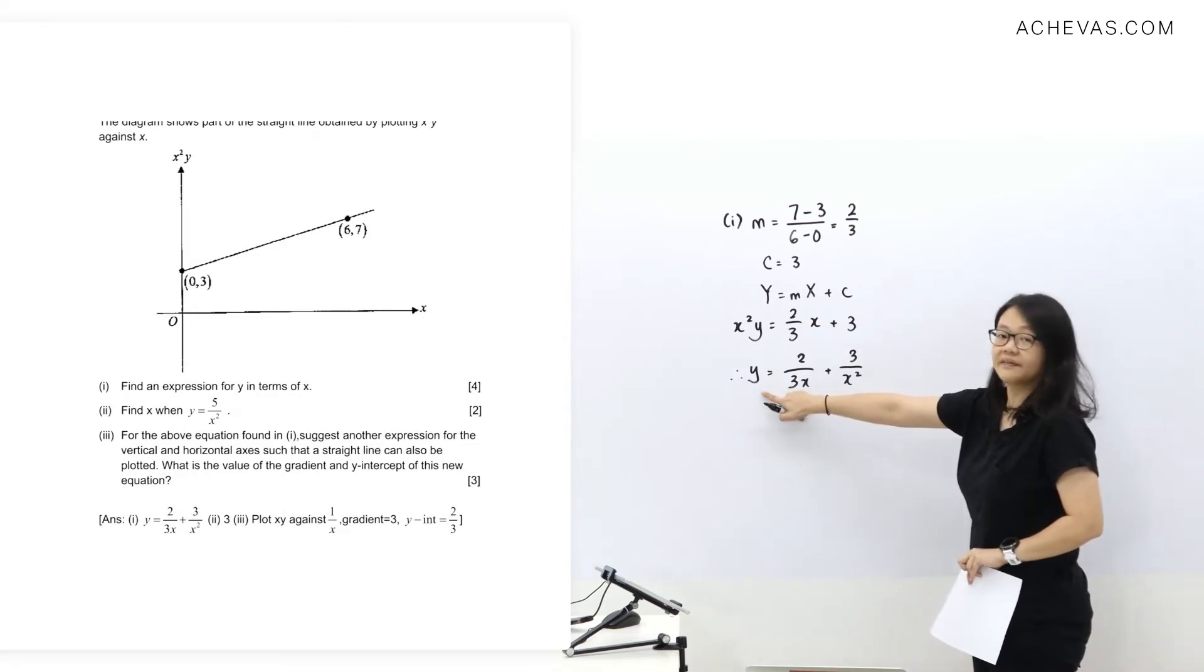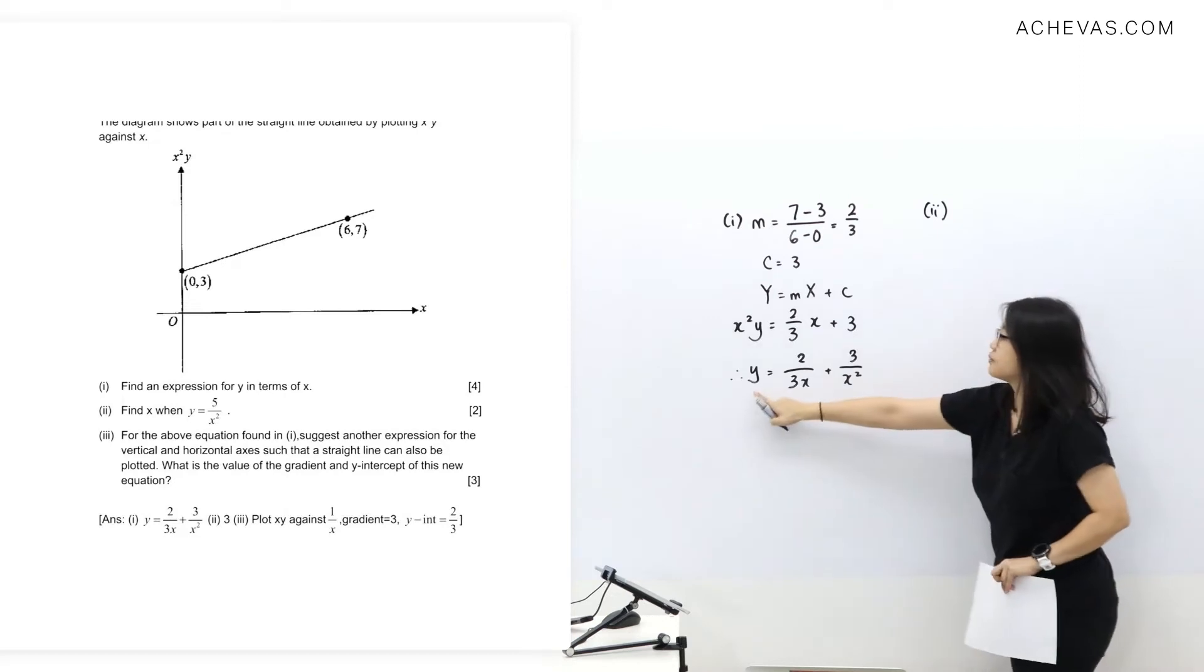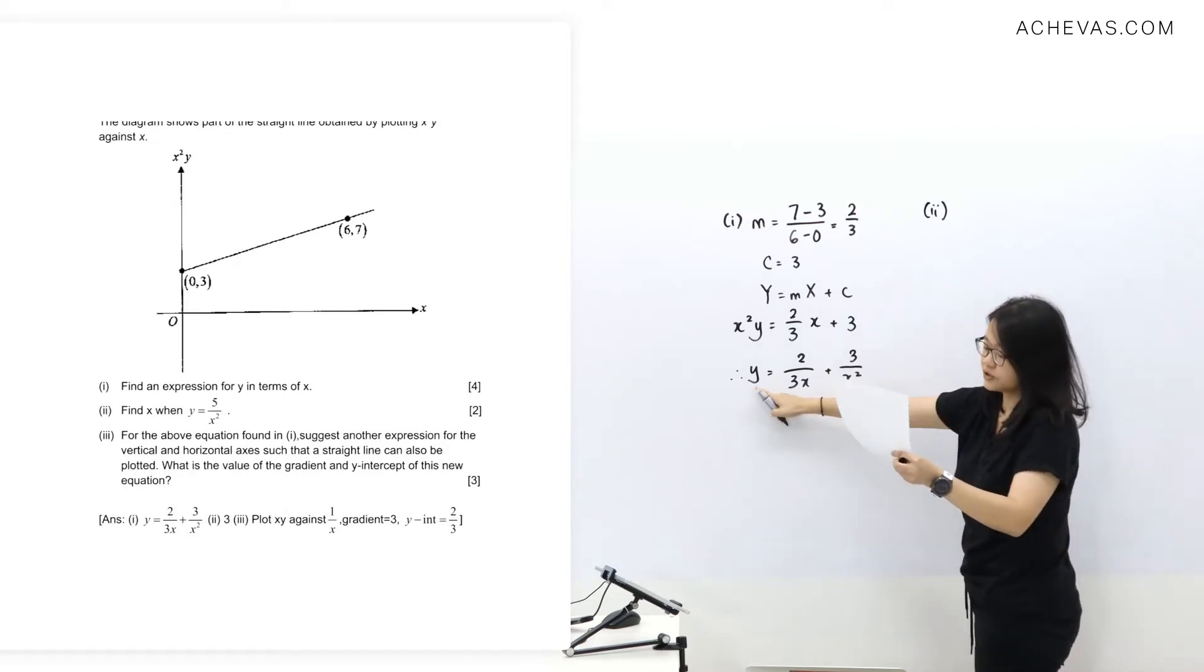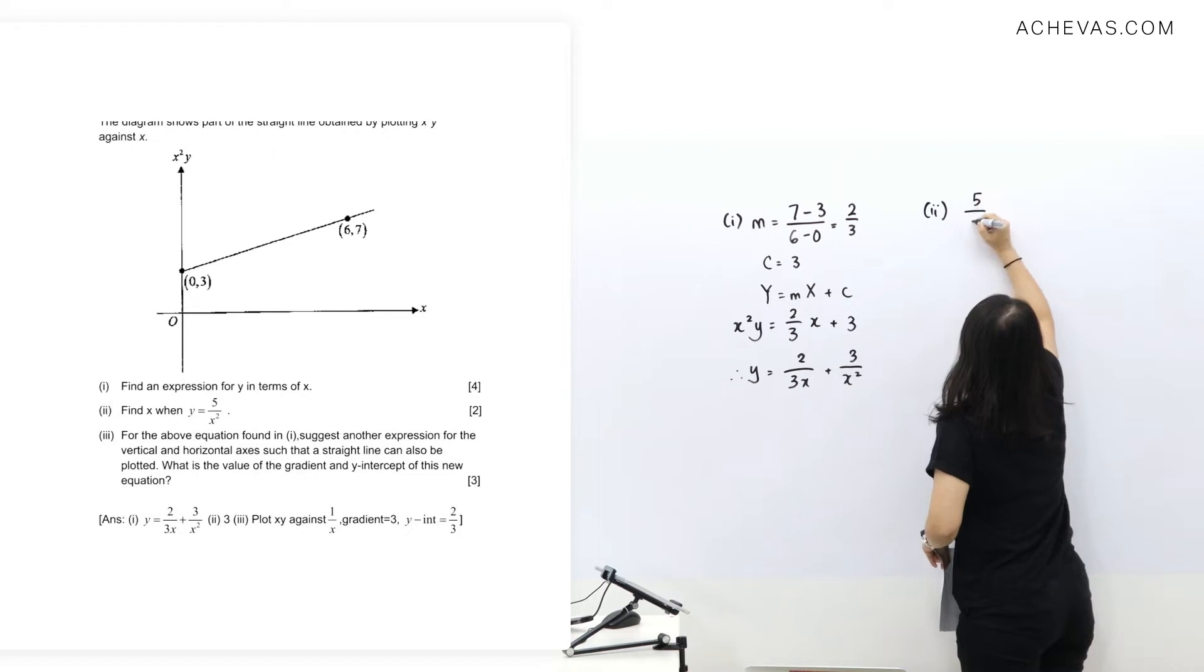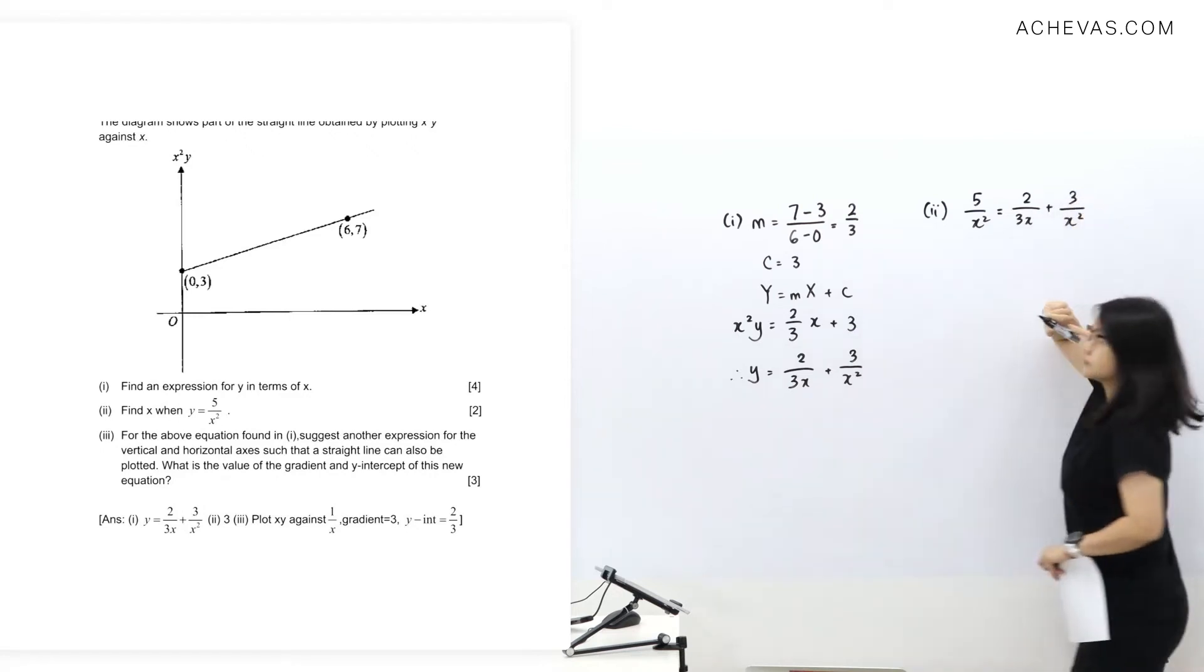So since we've already gotten until this step here in part 1, we're going to use this one. For part 2, we're going to replace this y value to 5 over x squared.